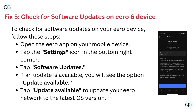Fix 5: Check for software updates on the Eero 6 device. To check for software updates, follow these steps: Open the Eero app on your mobile device. Tap the Settings icon in the bottom right corner. Tap Software Updates. If an update is available, you will see the option Update Available. Tap Update Available to update your Eero network to the latest OS version.